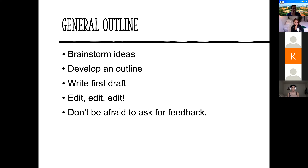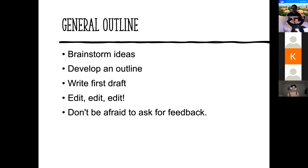For the general outline of your statement of purpose: brainstorm different ideas, develop an outline, write your first draft — which you can bring to the peer review workshops. Hopefully your first draft is much longer than 500 words because it's easier to edit down than to edit up. Don't be afraid to ask for feedback. You can attend both peer review workshops: bring your first draft to workshop two, get feedback, rewrite it, and come back with your final draft for workshop three.